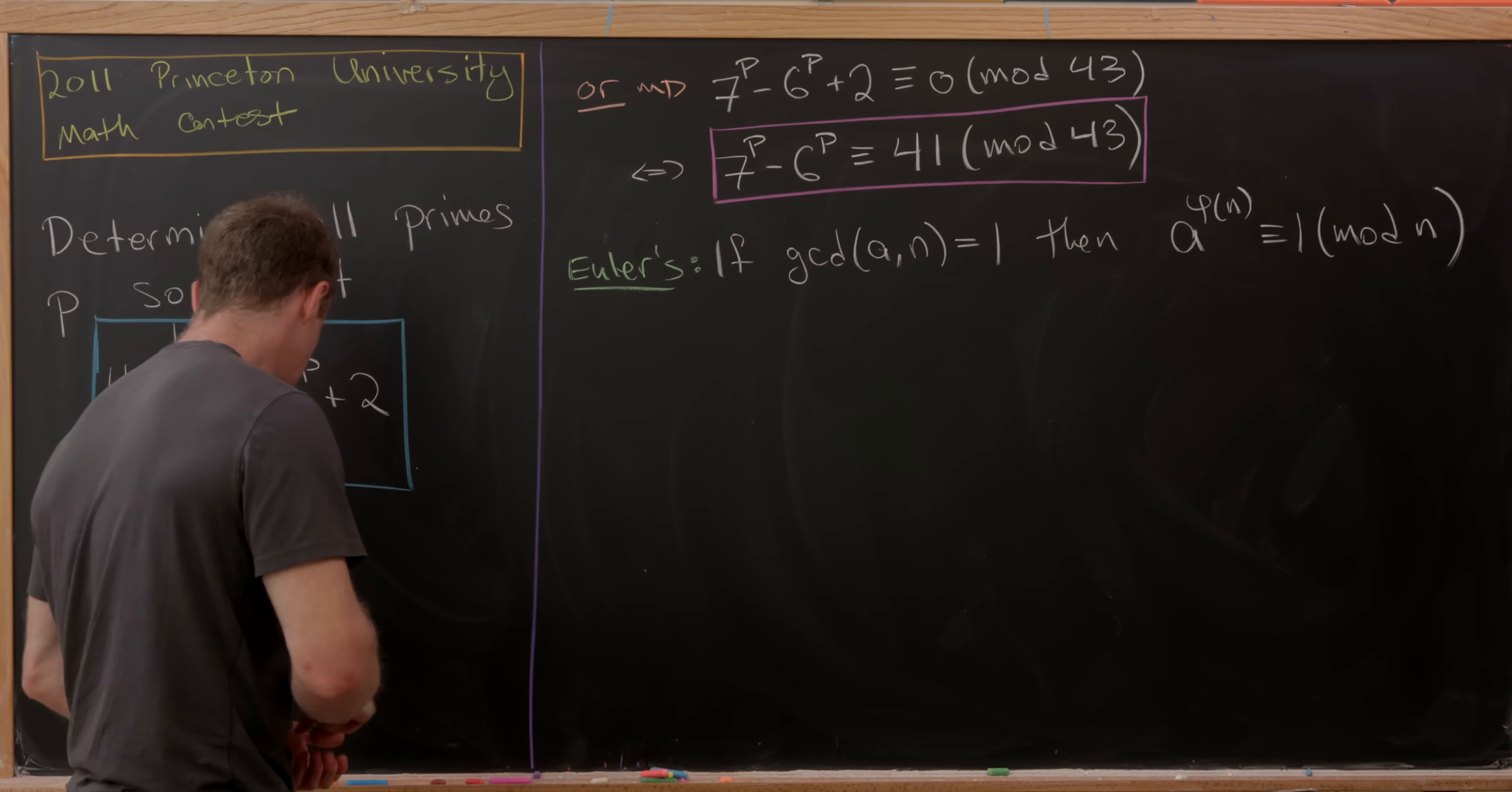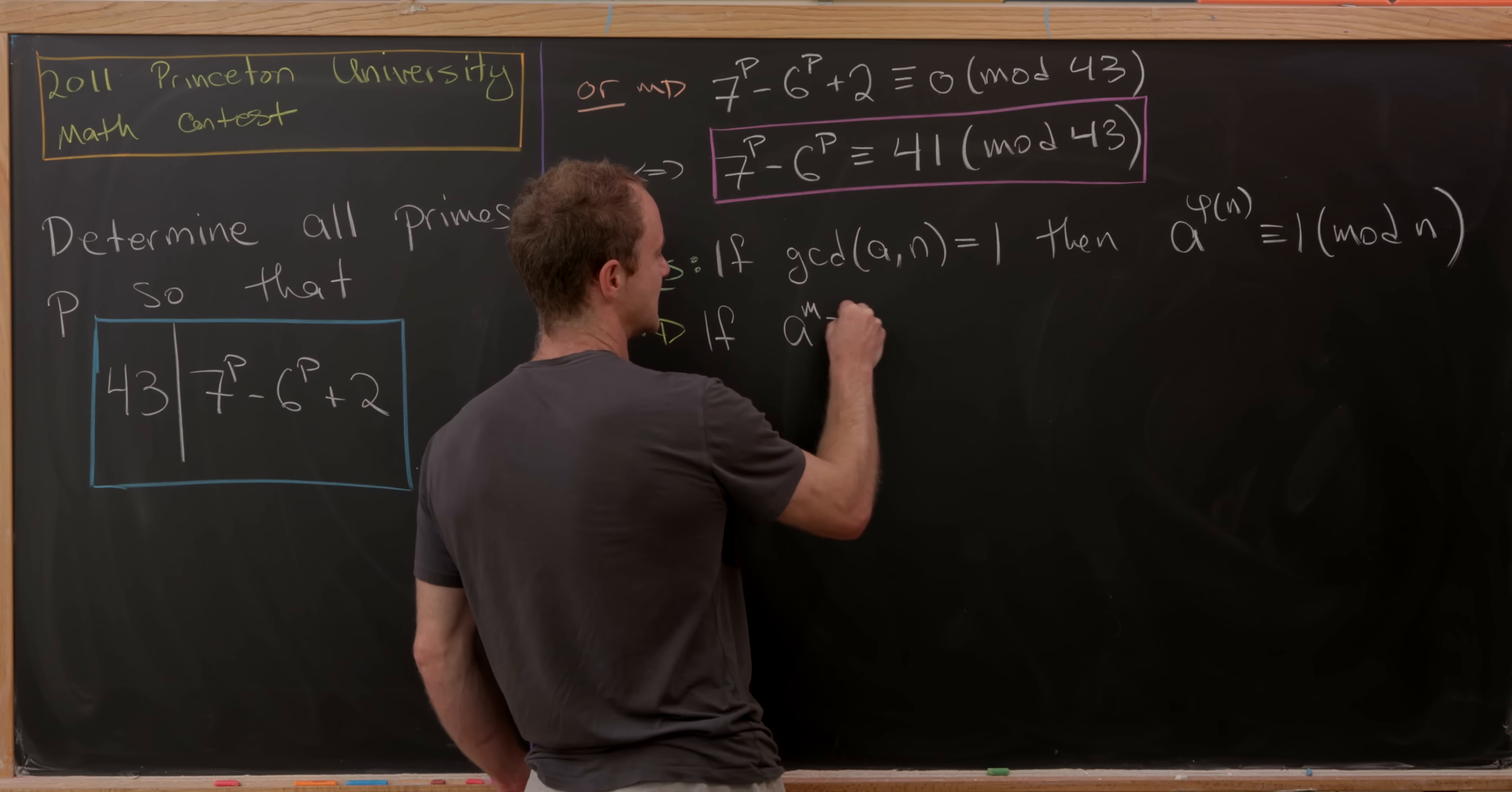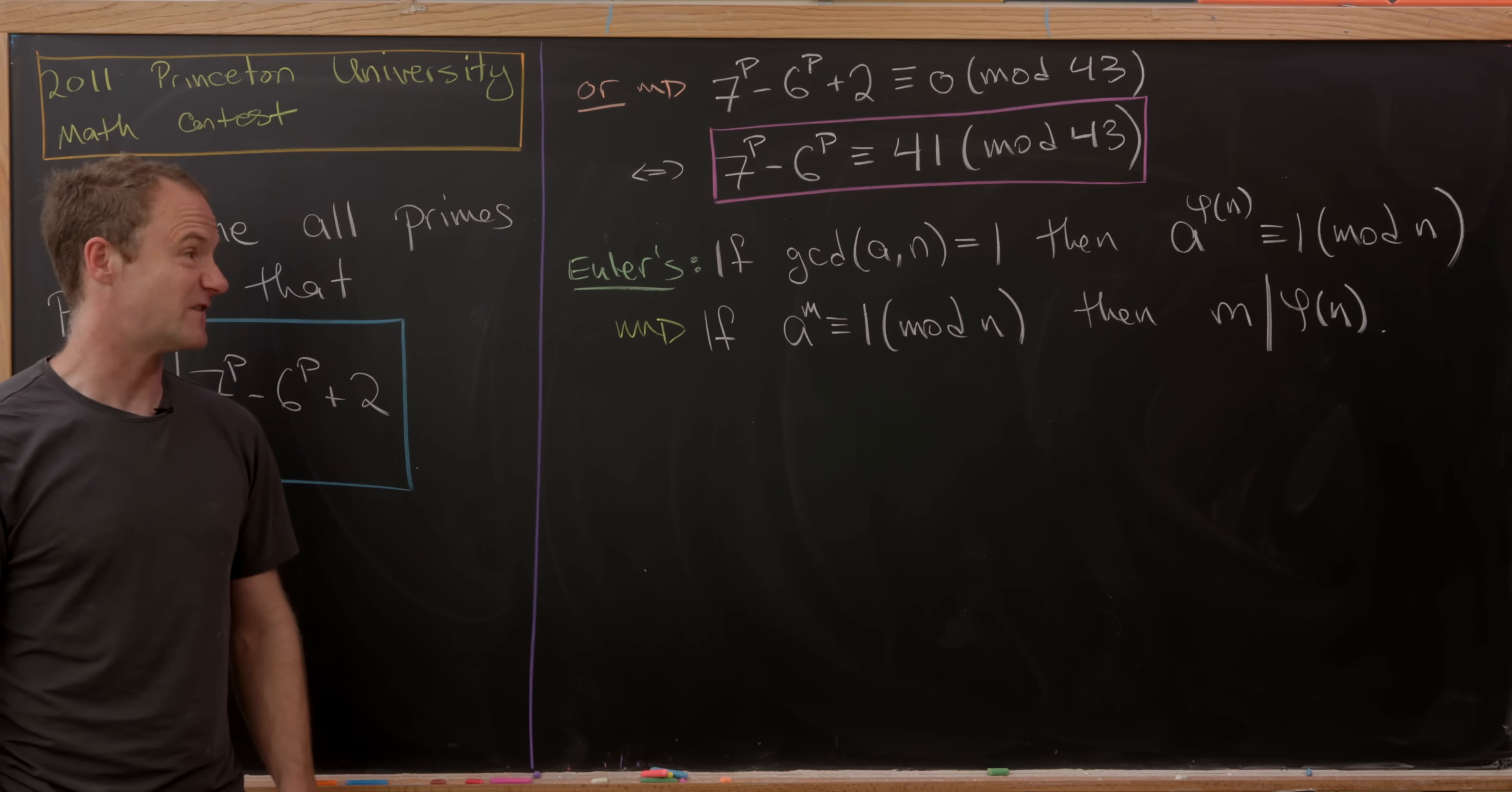Next I want to look at a result that follows from Euler's theorem having to do with the order of an integer modulo N. I'll just state it like this: if A^M is congruent to 1 modulo N, then M divides φ(N). What that really means is that the only orders of an integer modulo N are divisors of φ(N).